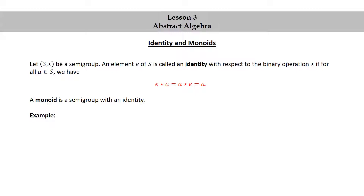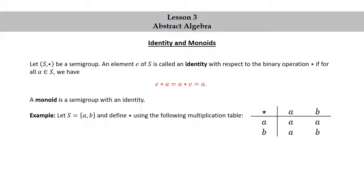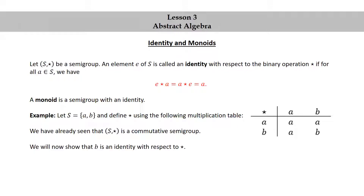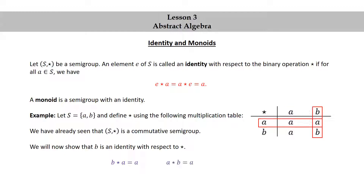Let's look at an example. Let S equal the set containing A and B, and define ★ using the following multiplication table. We have already seen that S★ is a commutative semigroup. We will now show that B is an identity with respect to ★. We have B★A = A, A★B = A, and B★B = B.